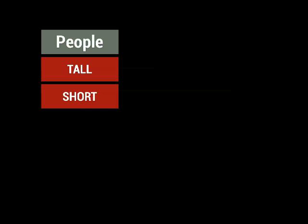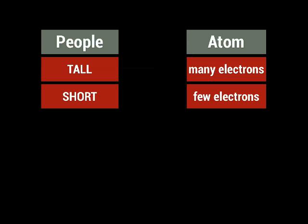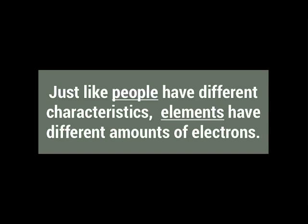Some people drive fast cars, some people drive slow cars — people have different characteristics. Just like people have different characteristics, atoms have different characteristics as well. Some atoms have many electrons, and some atoms have just a few electrons. Just like people have different characteristics, elements have different amounts of electrons.